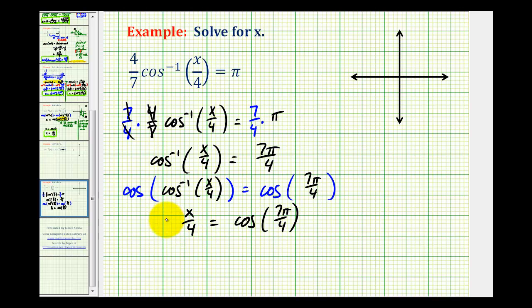To undo this division, we'll multiply both sides by four. This simplifies to x equals four times the cosine of seven pi over four.